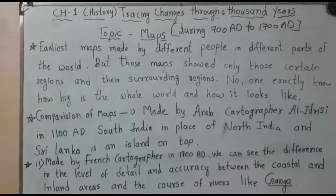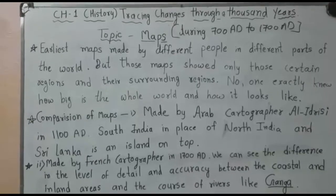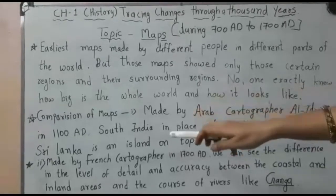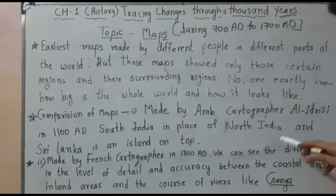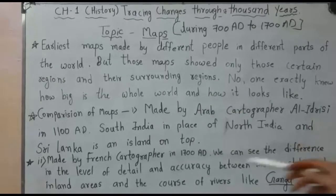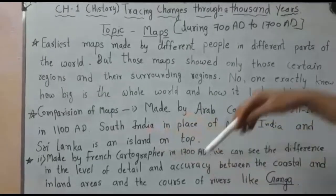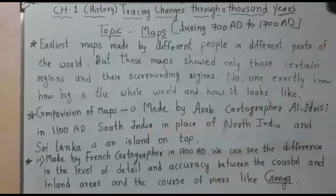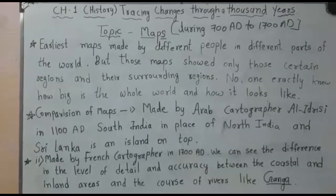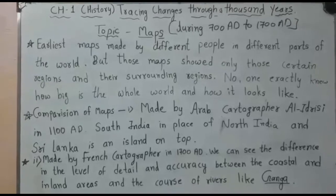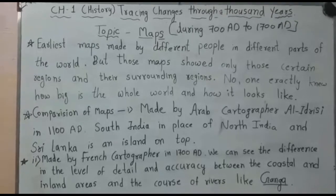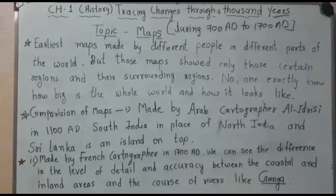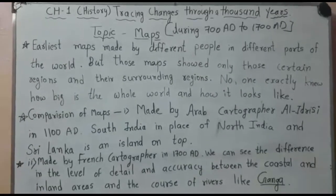In Al Idrissi's map, he showed South India in place of North India in the Indian subcontinent, and Sri Lanka is shown as an island on top. Nowadays we know that Sri Lanka is the southernmost island of the Indian subcontinent, so these differences were occurring in the earliest maps.